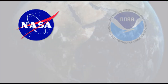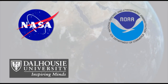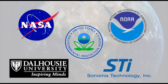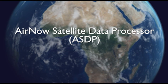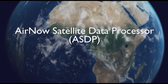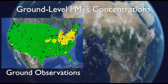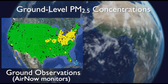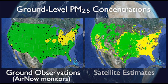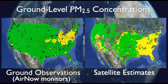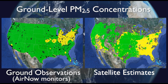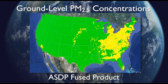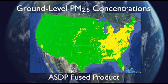Through a collaboration with NASA, NOAA, Dalhousie University, and Sonoma Technology, EPA created the AirNow Satellite Data Processor, or ASDP. The ASDP fuses ground-based measurements of near-surface PM2.5 concentrations from EPA's AirNow network with estimates derived from NASA's satellite measurements. This fused product provides more accurate and spatially complete estimates of PM2.5 concentrations across the U.S.